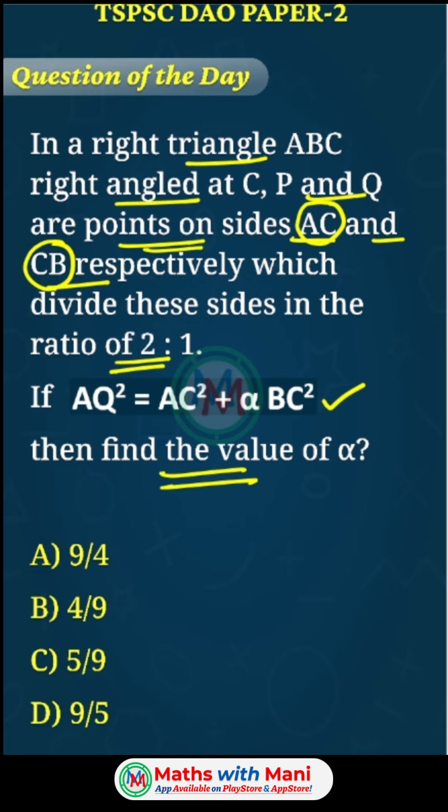This is the exact question from the TSPSC, the Telangana textbook. In that, it's given as prove that AQ² = AC² + some value times BC². Here they're asking directly for α. Whether it's 2:1 or 3:1, you need to understand the general approach. I'll tell you the short trick for these types of questions and whether there's any direct formula.